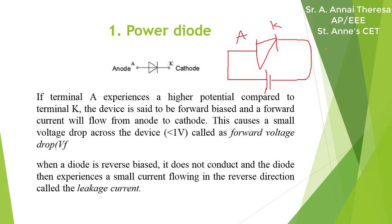In another case, if we connect the negative terminal of the battery to the anode and the positive terminal to the cathode, this is called reverse biased condition. Under reverse biased condition, there will be no current flow, but a small leakage current will flow.